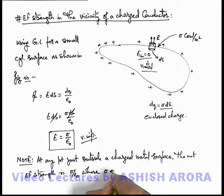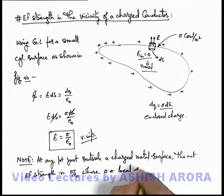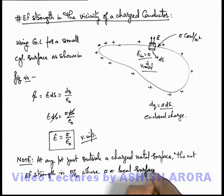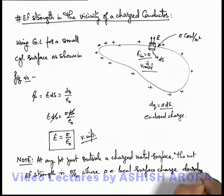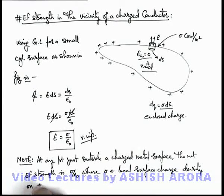Where sigma is the local surface charge density on surface at that point.